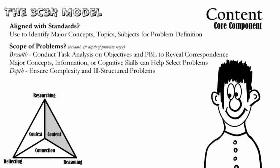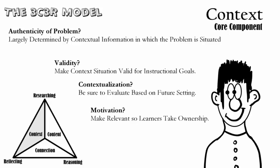Diving into the core components, we can see content as front and key. Hung provides us three attributes about content: ask what content may be available and what is relevant and realistic. The content will help drive a clear definition to the problem statement. Hung suggests that the model points us to looking closely at the content, which will help provide the problem with breadth and knowledge. The second C is context — how authentic is the problem? This may largely be determined by the contextual information in which the problem is situated. Hung points out to address validity, contextualization, and motivation as you look to the context of the problem.